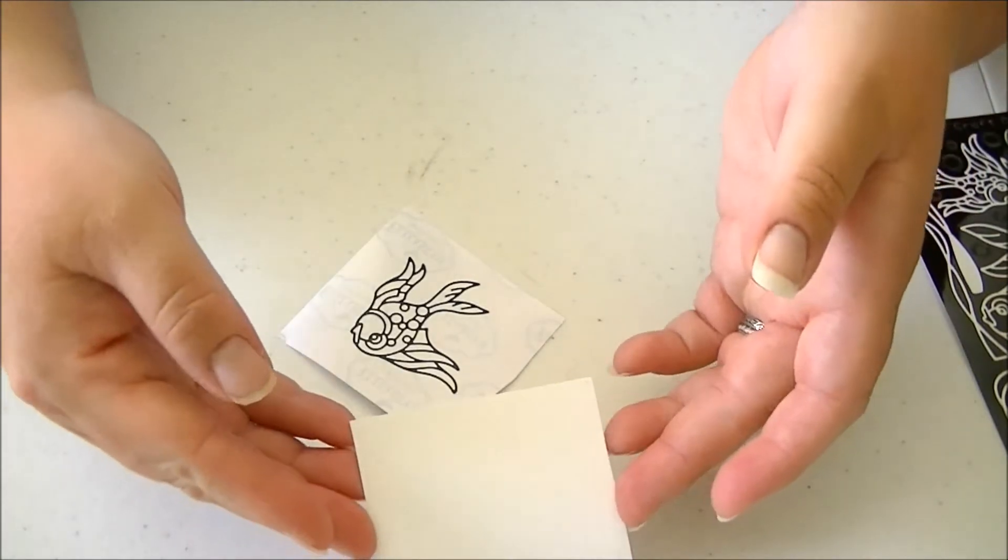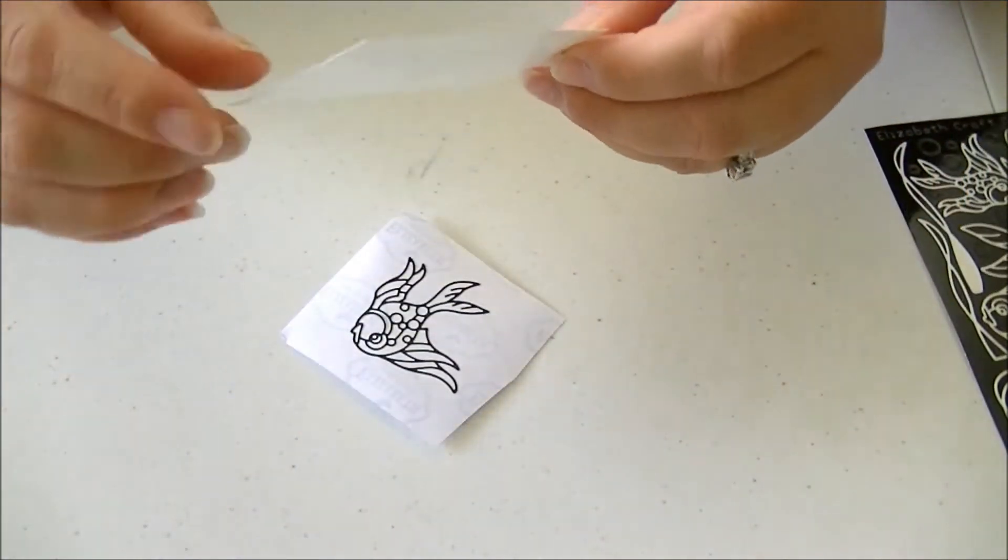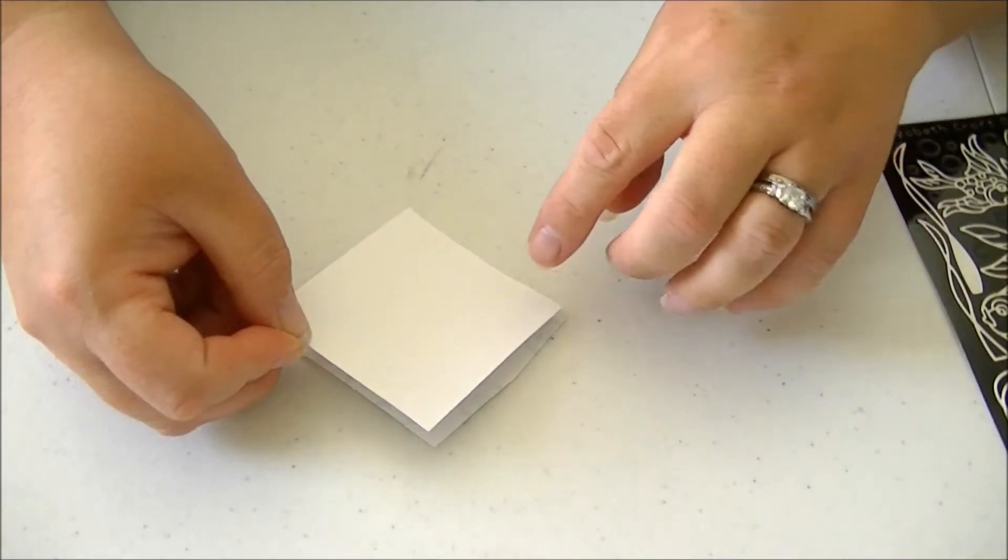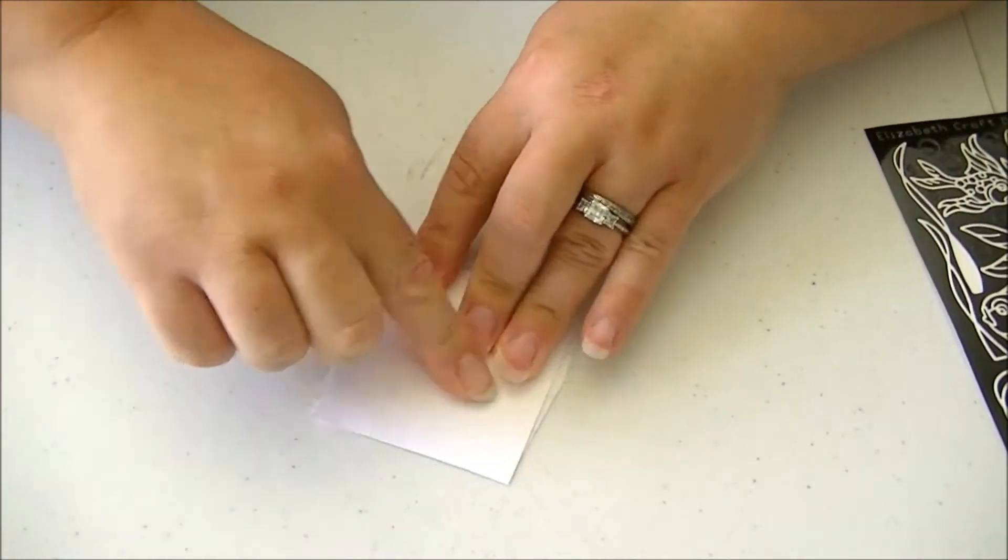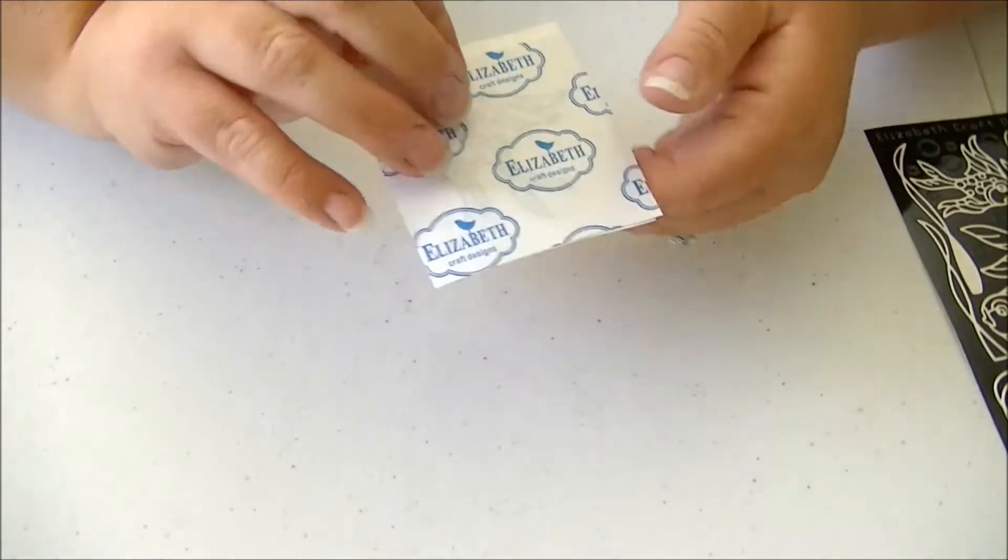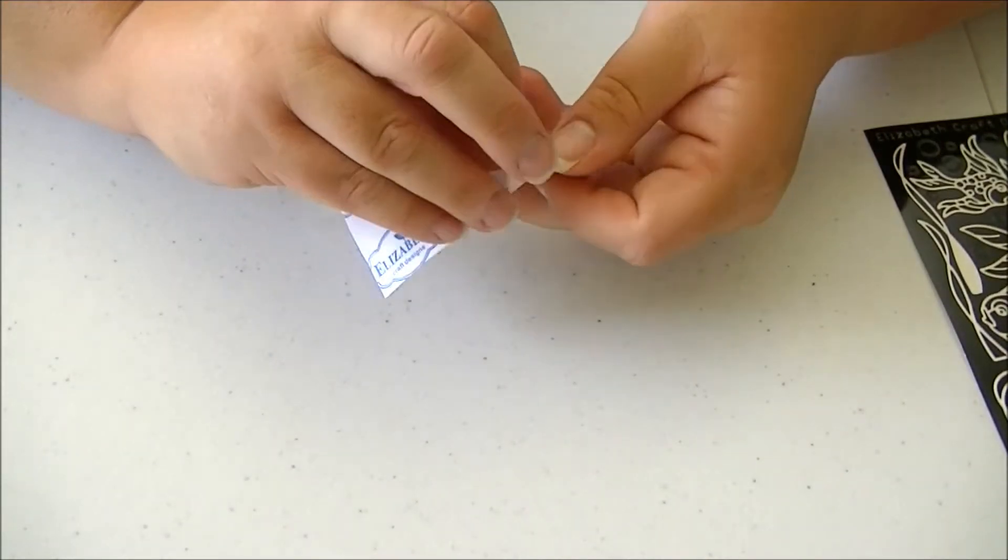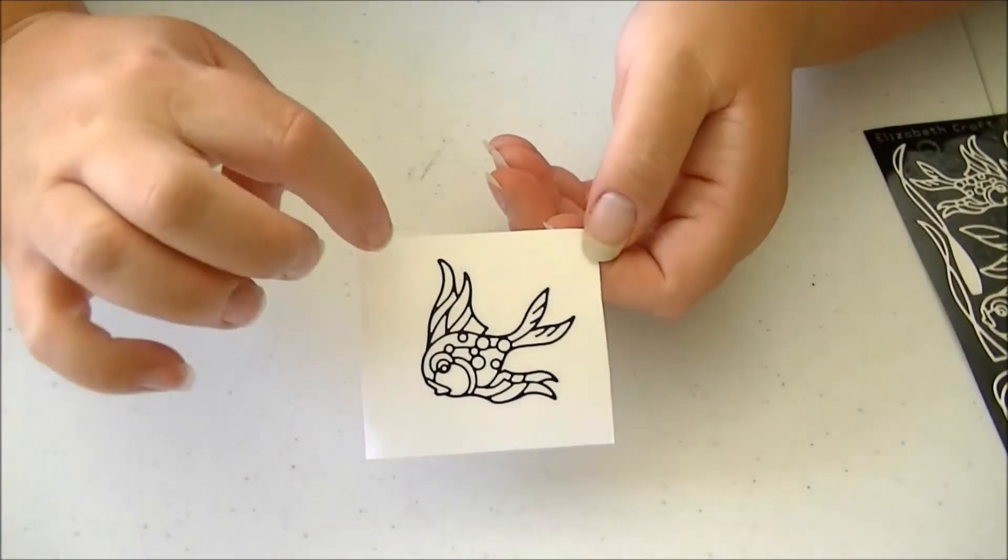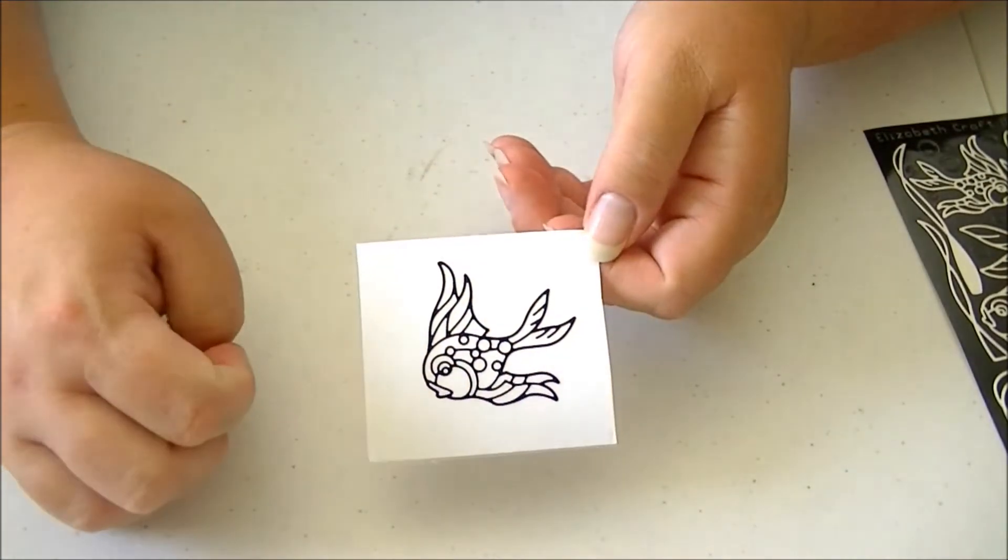Then take that sticky cardstock we set aside, flip it over so the sticky side is now down, and stick it right on top of our sticker. Now, when we turn it over and peel off this backing again, our sticker is right side up on the sticky background that's going to hold our glitter.